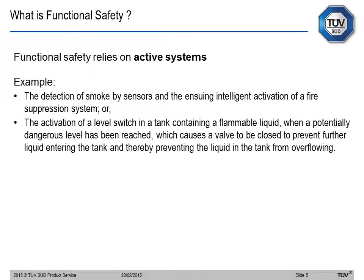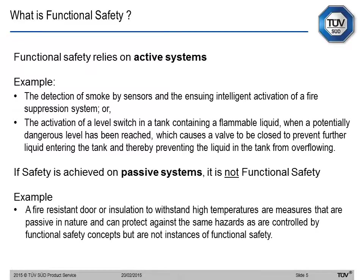Functional safety relies on active systems. An example is the detection of smoke by a sensor and the intelligent activation of a fire suppression system — because we prevent the fire from spreading, this detection system can be called an active system. If we think of active systems as proactive, then reactive systems are passive — such as a fire-resistant door to prevent fire spreading to other rooms. That is not functional safety, but it is still part of safety.